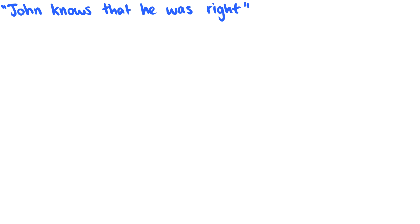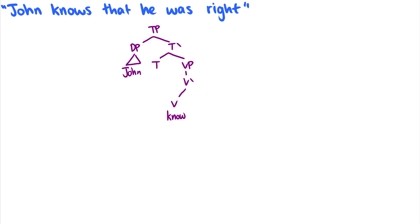Let's draw one tree for 'John knows that he was right,' now including tense information. I'll start with the TP rather than the CP. With our new structure we always have a T-bar and a T, and the complement of T will be the VP. John is our subject. 'Knows' is present tense, so this will be '-past.' You can draw a little arrow to show this becomes 'knows,' or just write the -s on 'knows.' The complement of the verb is a CP — there's an overt 'that,' and this is not a question.